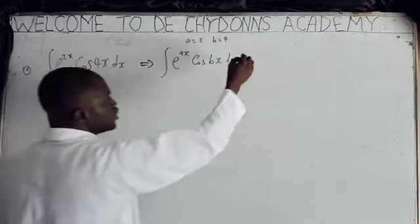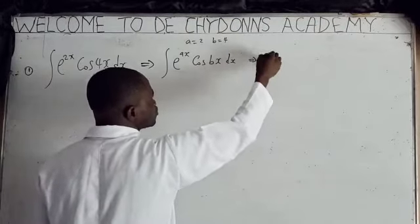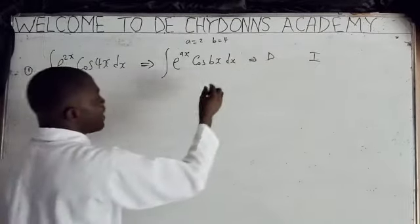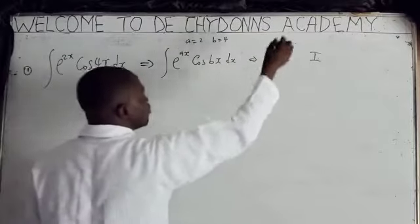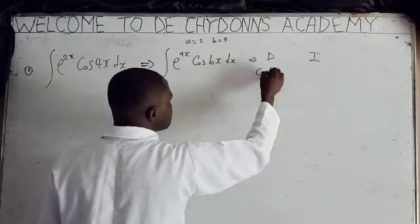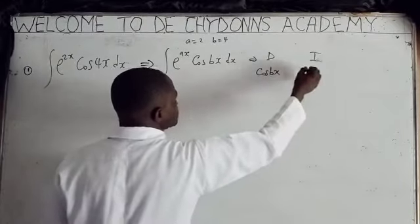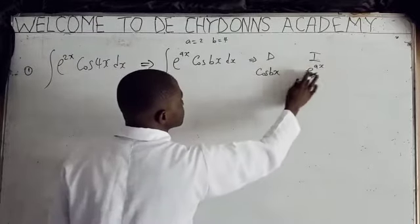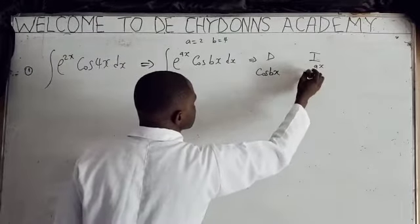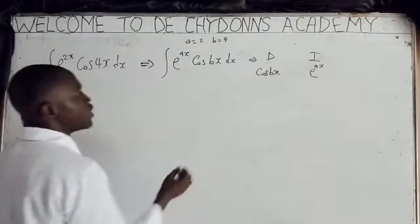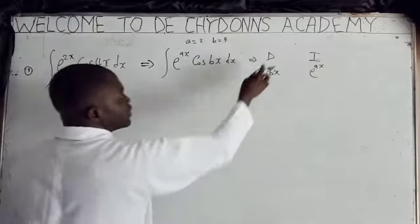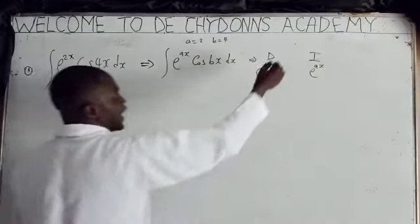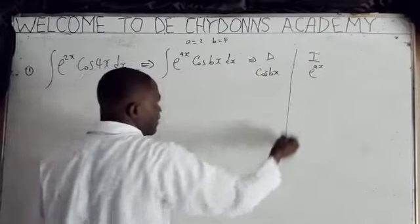We use the tabular method to do it. In the tabular method, we put cos(bx) on the differentiation side and e^(ax) on the integration side. The left column means differentiation and the right column means integration.